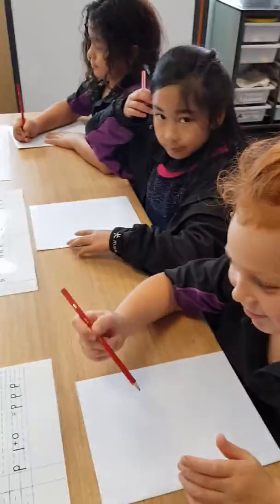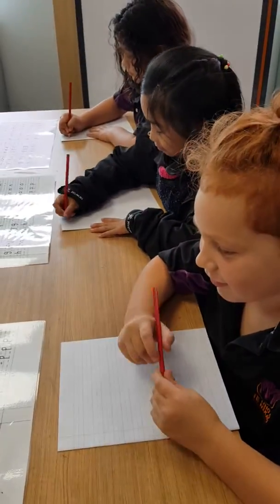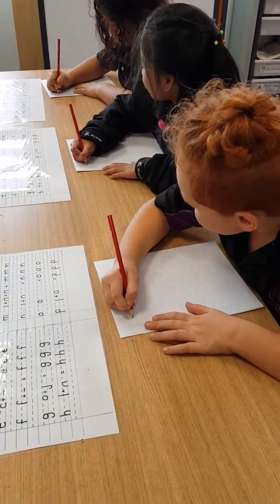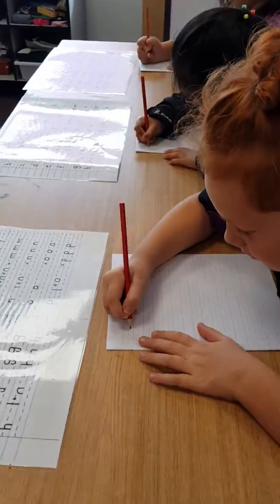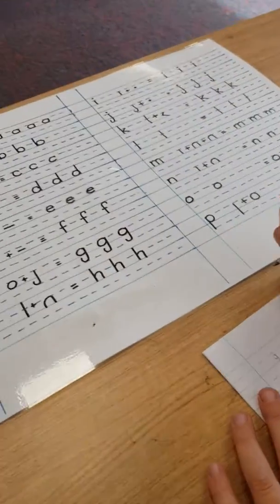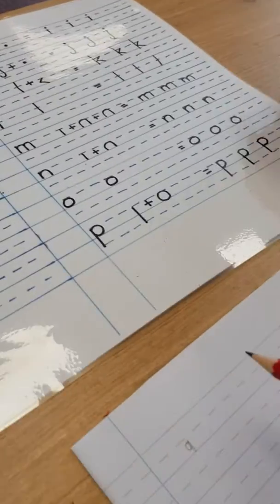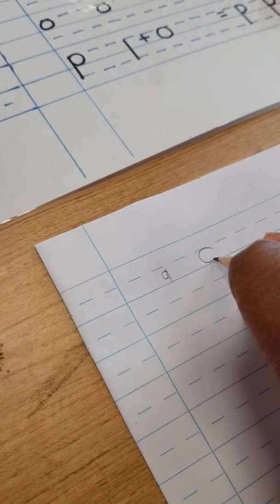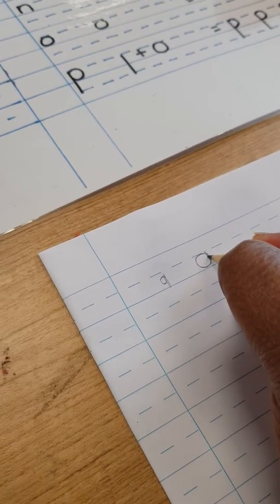So I would like the three of you to practice drawing, writing A with a wide open mouth and a short stick. But I want you to practice not lifting up your pencil. So what would you draw first? You would first draw wide open mouth, short stick. Can you practice that?